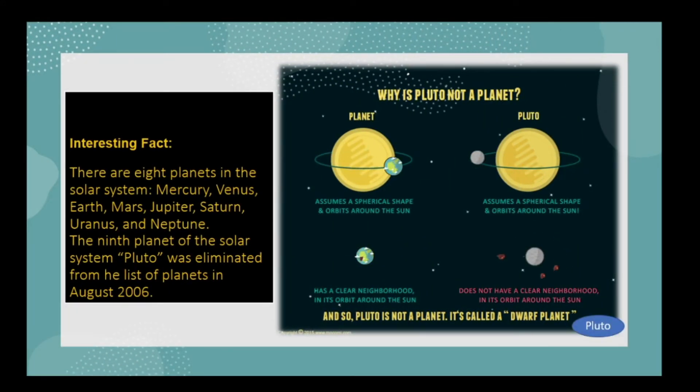Let's cover another interesting fact. There are eight planets in the solar system: Mercury, Venus, Earth, Mars, Jupiter, Saturn, Uranus, and Neptune. The ninth planet of the solar system, Pluto, was eliminated from the list of planets in August 2006. Why is Pluto not a planet? Because it does not clear its orbit around the Sun, so it is often called a dwarf planet.